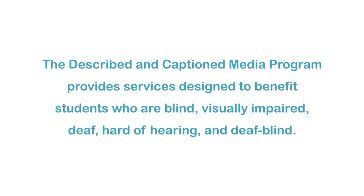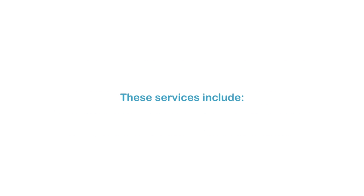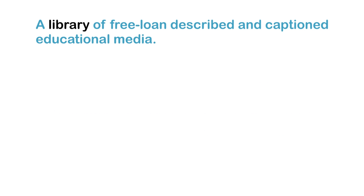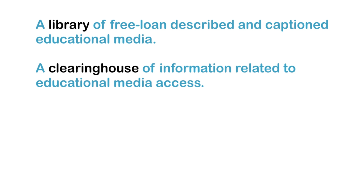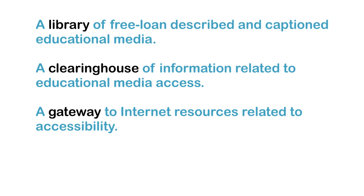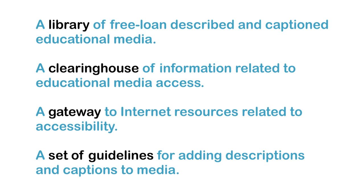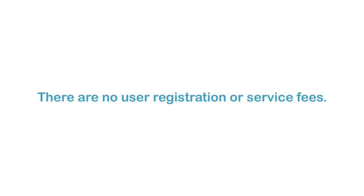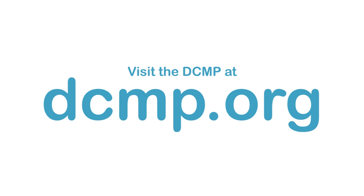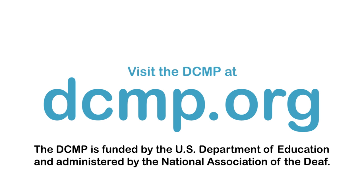The Described and Captioned Media Program provides services designed to benefit students who are blind, visually impaired, deaf, hard of hearing, and deafblind. These services include a library of free loan described and captioned educational media, a clearinghouse of information related to educational media access, a gateway to internet resources related to accessibility, and a set of guidelines for adding descriptions and captions to media. There are no user registration or service fees. Visit the DCMP at dcmp.org. The DCMP is funded by the U.S. Department of Education and administered by the National Association of the Deaf.